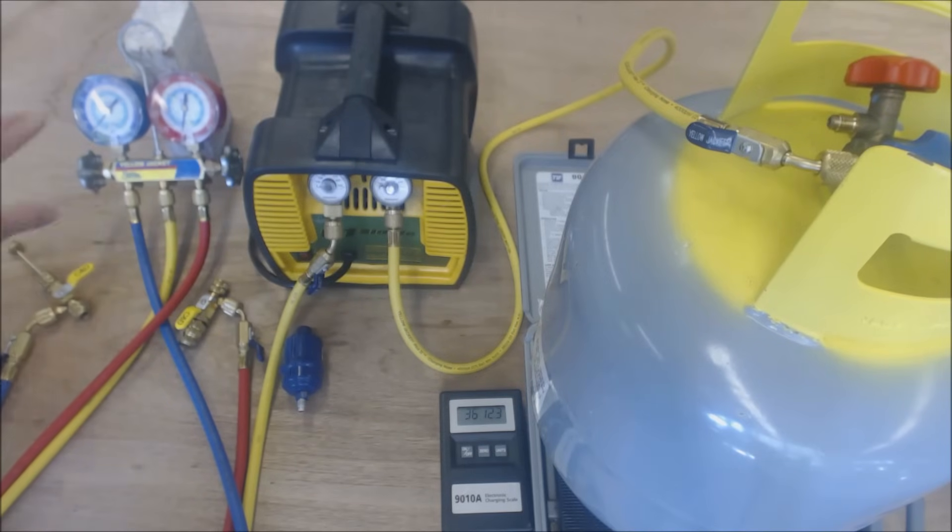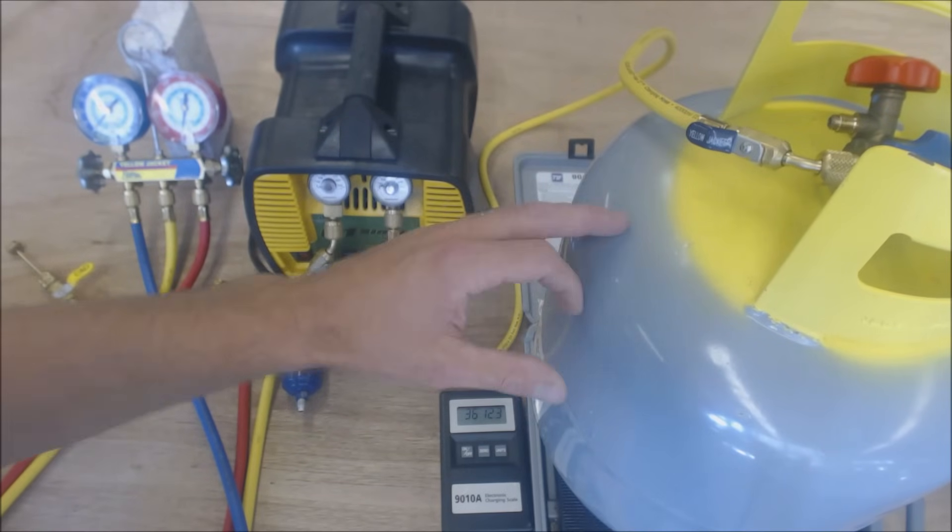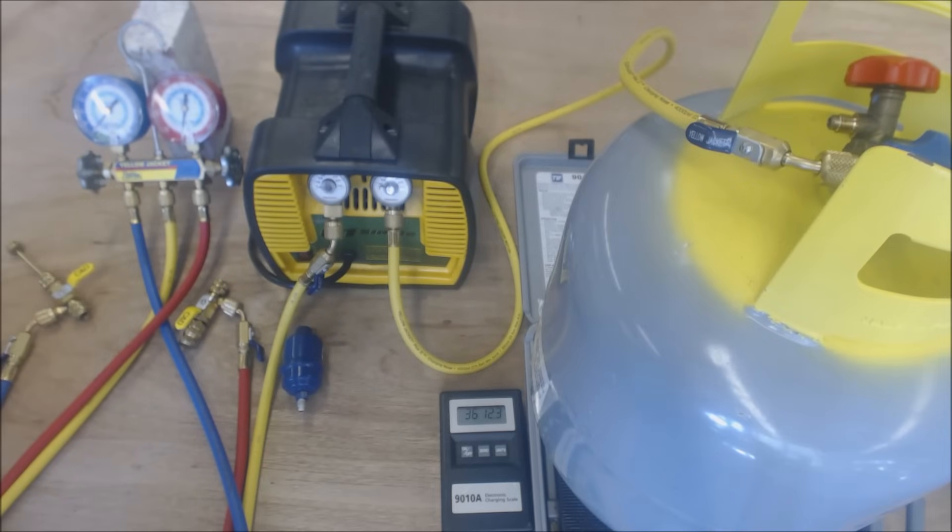For HFCs like 134A and R-410A, you pull them down to 10 inch Hg. For R-22, if the system's below 200 pounds, you're going to pull that down to zero. You can check out your guidelines on that at EPA.gov just to verify those things.